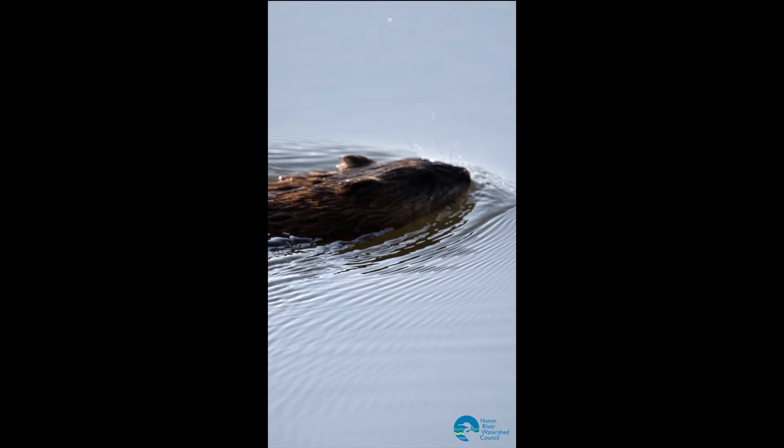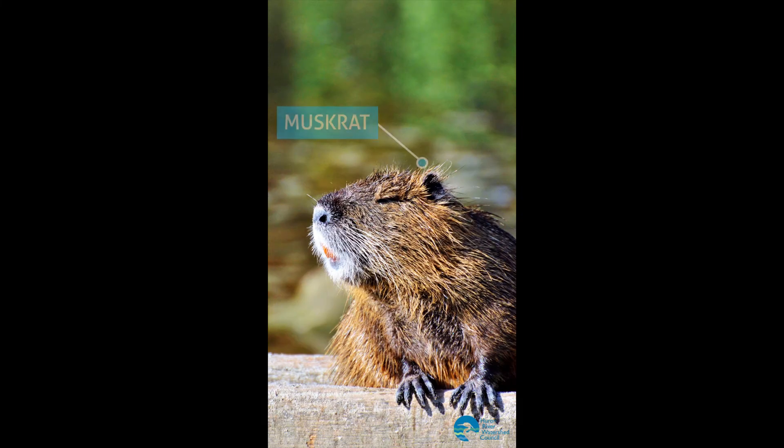First off, you're probably most likely to see these mammals as a little head popping out of the water from a distance, because they're all shy and they'll hide if you get close. It can be hard to tell what they are when that's all you see. Probably you are looking at a muskrat, which is the most common of the bunch.